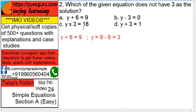When you take 6 to this side, this is plus so it becomes minus. 9 minus 6 is 3, so y equals 3 is the answer. What we require is does not have 3 as a solution.